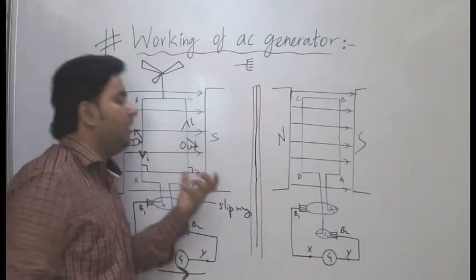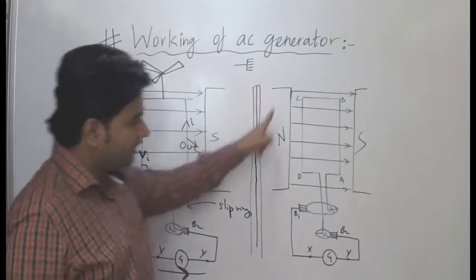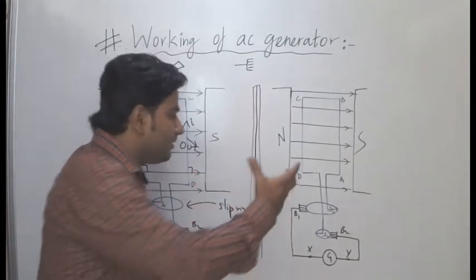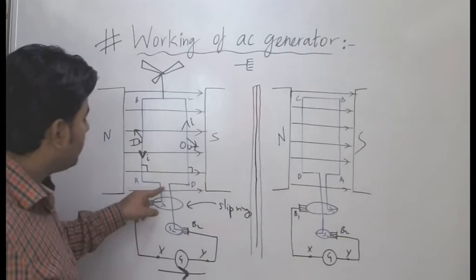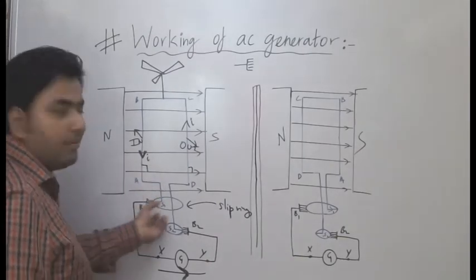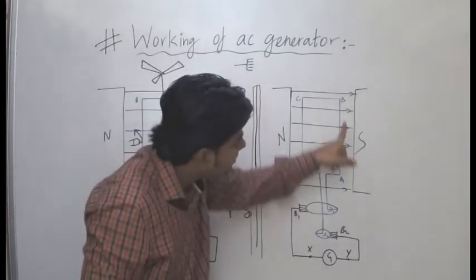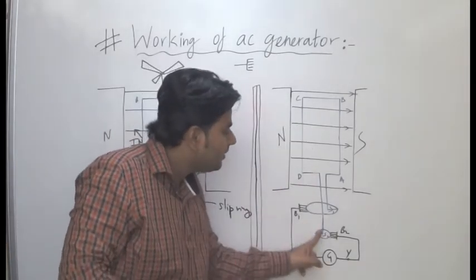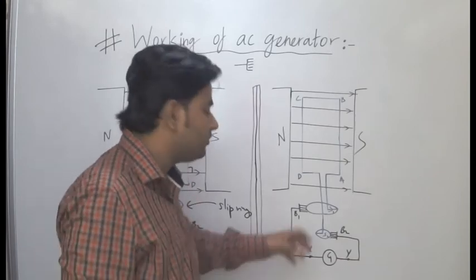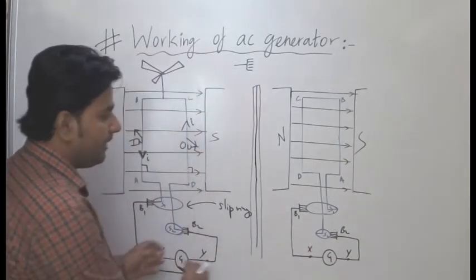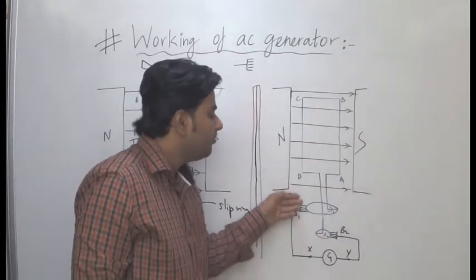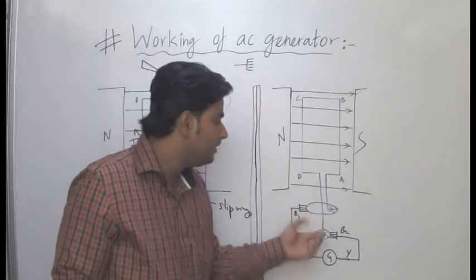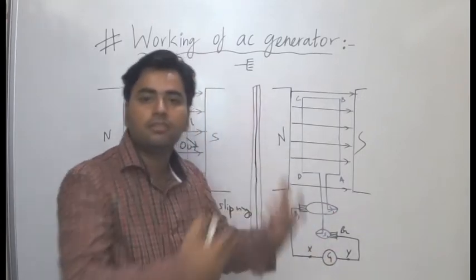When the other half cycle comes — that is, when the CD side is now on the other side — AB is this way and CD is the other way. AB is still connected to S1 and CD is connected to S2. The setup is such that B1 is in temporary sliding contact with S1 and B2 is slipping over to S2.